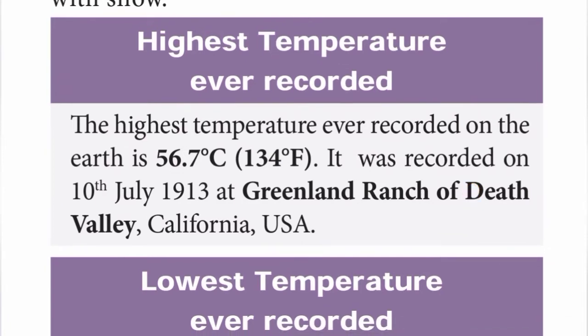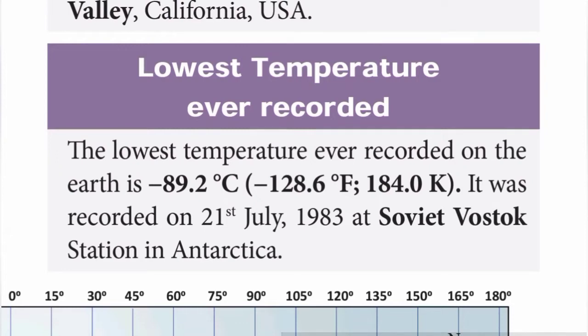The highest temperature ever recorded on earth is 56.7 degrees Celsius, that is 134 degrees Fahrenheit. It was recorded on 10th July 1913 at Greenland Ranch, Death Valley, California, USA. The lowest temperature ever recorded is minus 89.2 degrees Celsius, recorded on 21st July 1983 at Soviet Vostok Station in Antarctica.